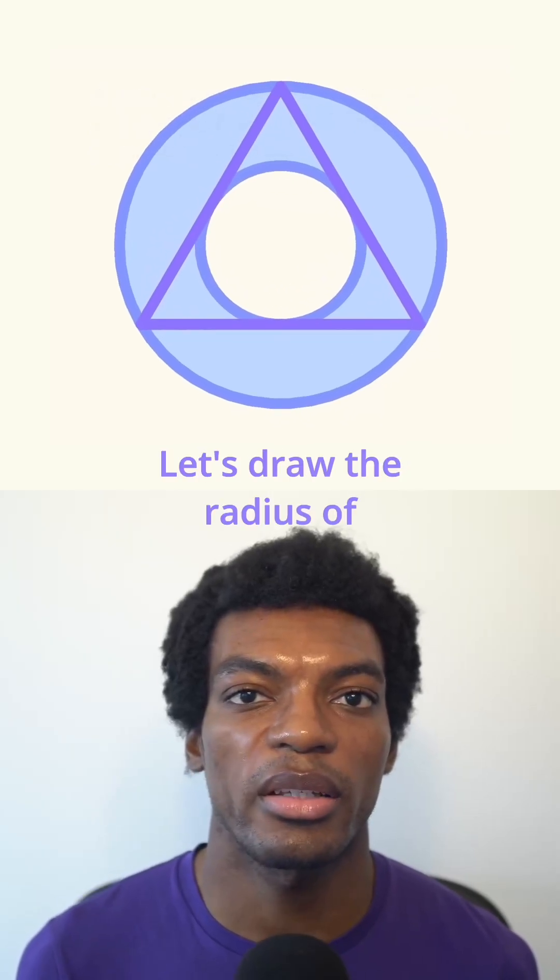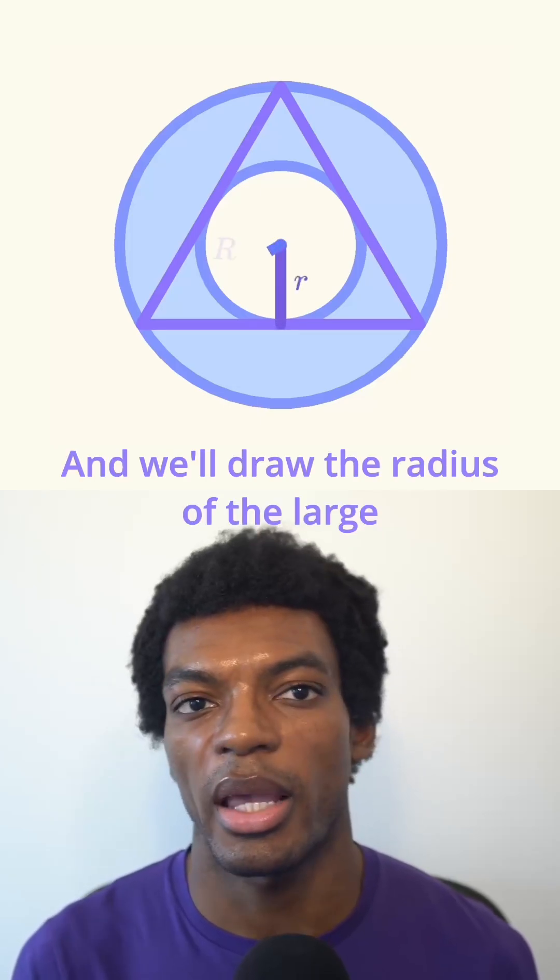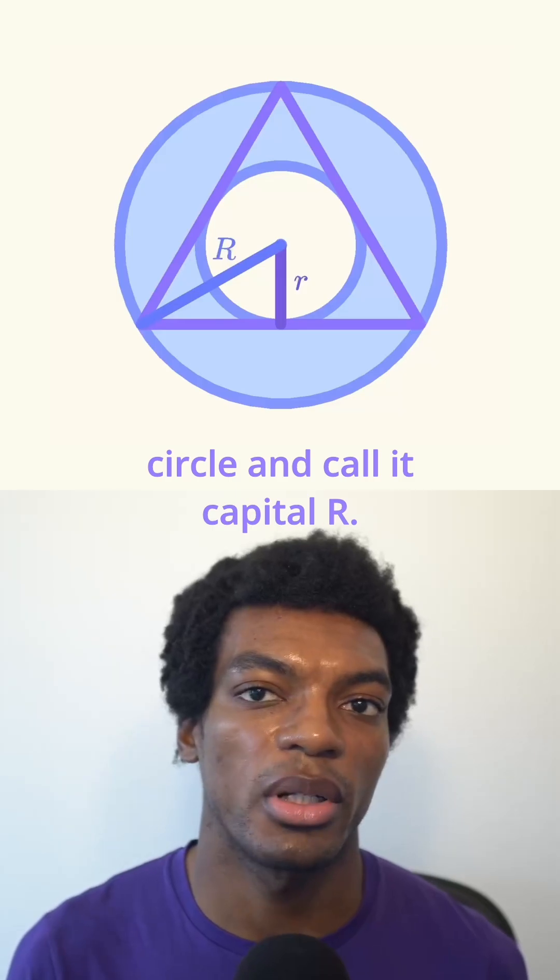Let's draw the radius of the incircle and label it r. And we'll draw the radius of the large circle and call it capital R.